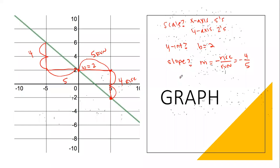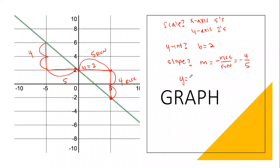People usually accidentally put five over four or do run over rise. Just keep saying 'rise over run' — my change in Y over my change in X. It helps me to draw the triangle underneath so I see the rise first before the run. So my slope is negative four-fifths, my Y-intercept is two. Mia, can you give me the equation? Y equals negative four over five x plus two.